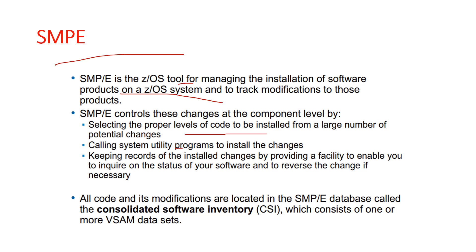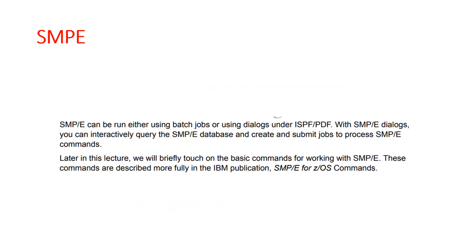SMP also calls system utility programs to install the changes, and keeps records of installed changes by providing a facility to inquire on the status of your software and to reverse a change if necessary. All code and its modifications are located in an SMP data set called CSI — that means Consolidated Software Inventory — which consists of one or more VSAM data sets. SMP can be run either using a batch job or using the dialogues under ISPF. With SMP dialogues you can interactively query the SMP data set and create and submit jobs to process SMP commands.